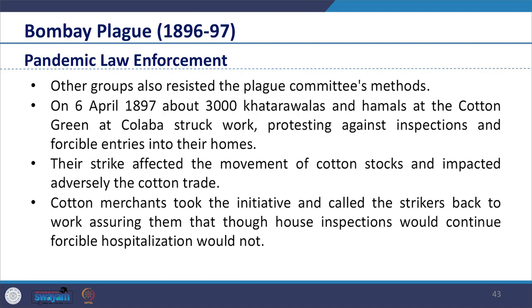Other groups also resisted the plague committee's methods. On 6th April 1897, about 3,000 Khatrawalas and Hummels at Cotton Green at Kolaba struck work, protesting against inspection and forcible entries into their homes. Their strike affected the movement of cotton stocks and adversely impacted the cotton trade. In this case, cotton merchants took the initiative and called the strikers back to work, assuring them that though house inspections would continue, forcible hospitalization would not.